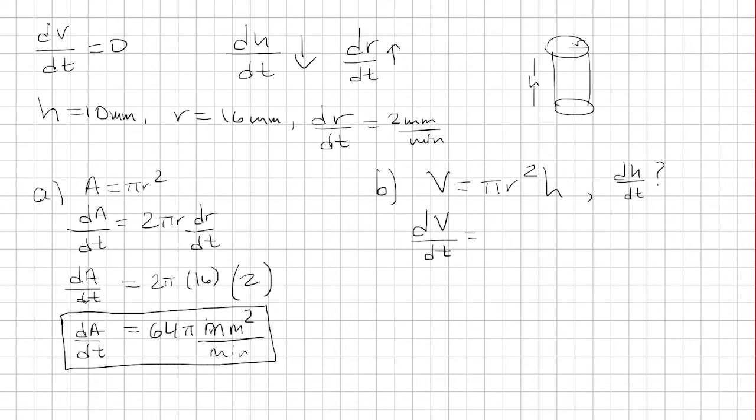So for the derivative, we have to use the product rule. Take the derivative of πr², which is 2πr dr/dt, times h. Plus take the derivative of h, and then multiply that by πr².